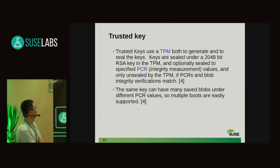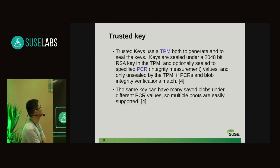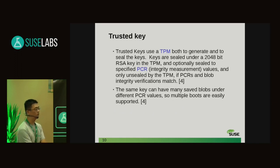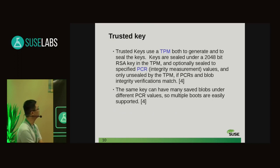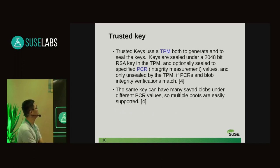First I will introduce the trusted key. The trusted key uses a TPM both to generate and seal the key. The key payload is a random value from the kernel's random pool. The kernel uses the TPM to seal this random number. Optionally, we can seal with specific PCR registers in the TPM, so the encrypted blob can only be unsealed — we say decrypted — on the same machine. Even if you get the encrypted blob, you cannot decrypt it unless you have the same TPM on the same machine.